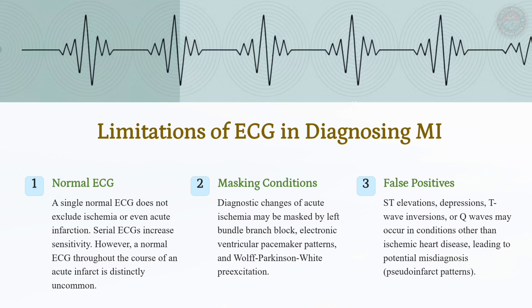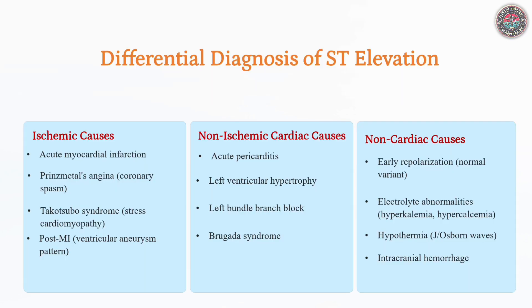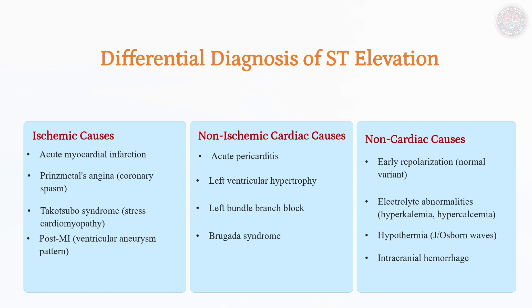ST elevation is most commonly seen in STEMI but can also result from other ischemic conditions. Prinzmetal's angina causes transient ST elevation due to coronary vasospasm, while Takotsubo syndrome mimics STEMI with ST elevation and troponin rise but without obstructive CAD. Distinguishing these conditions is crucial, as their management differs from STEMI.